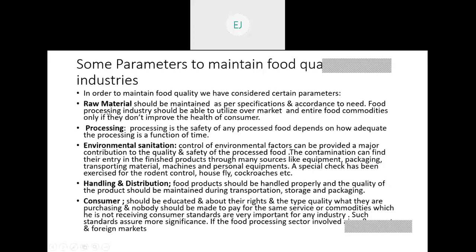There are some parameters that we have to maintain for maintaining quality in food industries. First of all, raw material — you have to maintain the specification. For example, if you are making biscuit or bread, you need a specific amount of gluten percentage. For making bread, you need high gluten, and for cakes, you need low gluten. So in case of that, you have to maintain that.